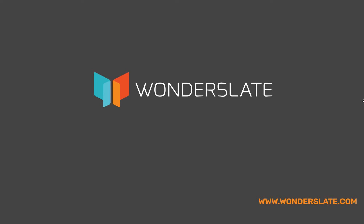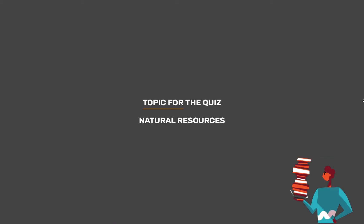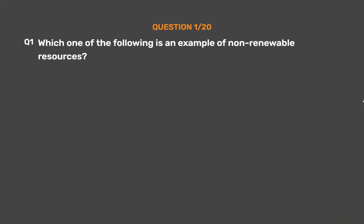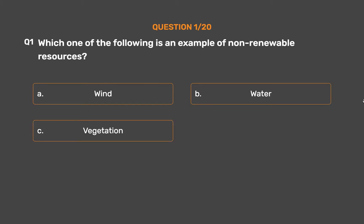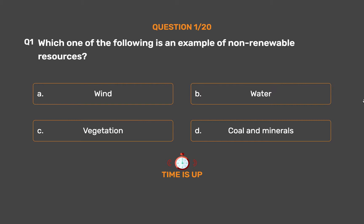Welcome to Wonderslate. Subscribe to our Telegram channel given in the description for updates and study materials. Topic for today's quizzes: Natural Resources. Question number one: which one of the following is an example of non-renewable resources? Option A: wind. Option B: water. Option C: vegetation. Option D: coal and minerals. The correct answer is option D, coal and minerals.